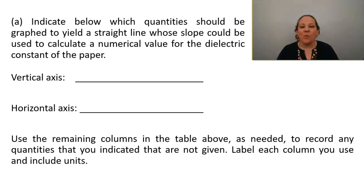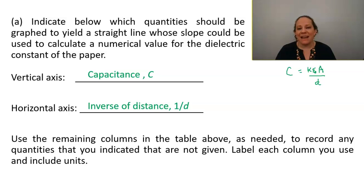Part A indicate below which quantities should be graphed to yield a straight line whose slope could be used to calculate a numerical value for the dielectric constant of the paper. So it may be helpful to you to remember the equation, capacitance equals dielectric constant times epsilon naught times the area divided by the distance between the plates. And that tells us that our vertical axis should be the capacitance C and our horizontal axis should be the inverse of distance 1 over D.